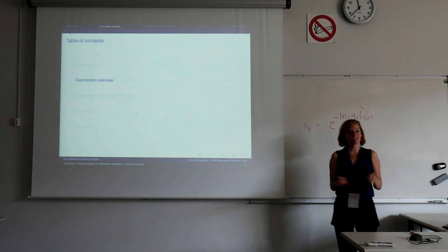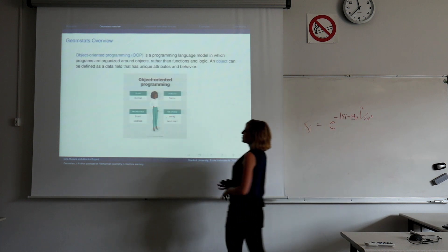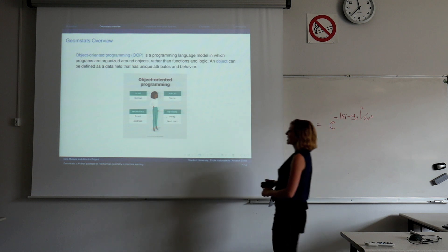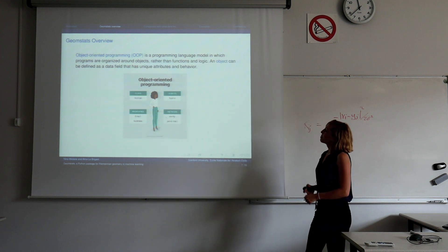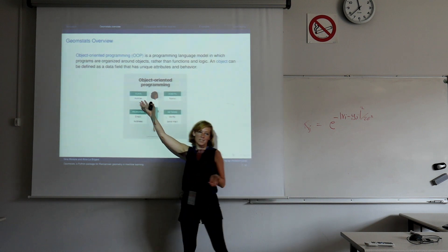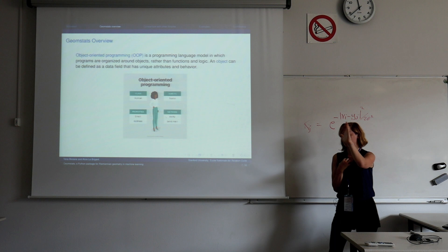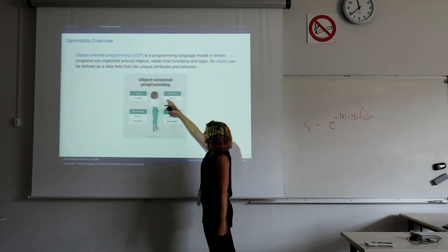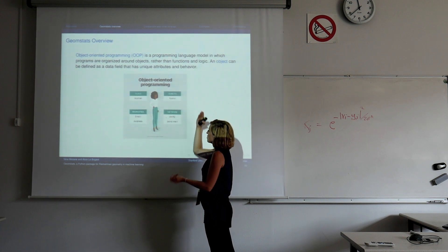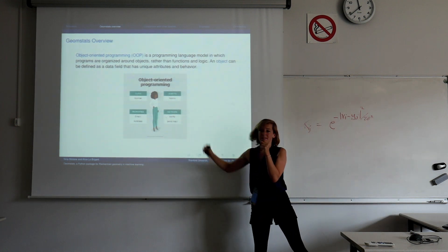Now let me give you an overview of the library — let's call it GeoStats for geometric statistics. The main thing it uses is object-oriented programming, OOP, which is a programming model in which programs are organized around objects rather than functions. An object can be defined as a data field that has unique attributes and behavior. For example, I am an object of the class human. A class is basically a template that explains the recipe to build objects from, with properties like an email and an address, and methods like sendEmail.